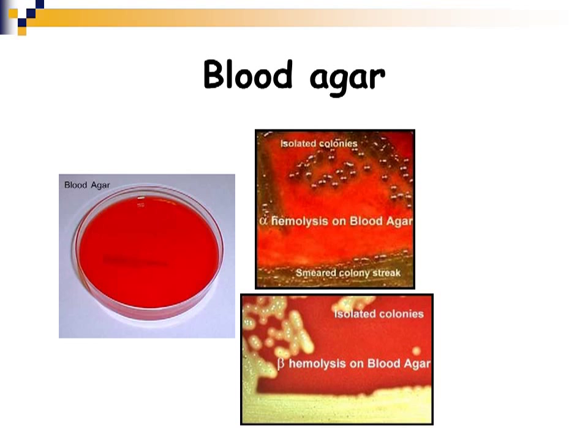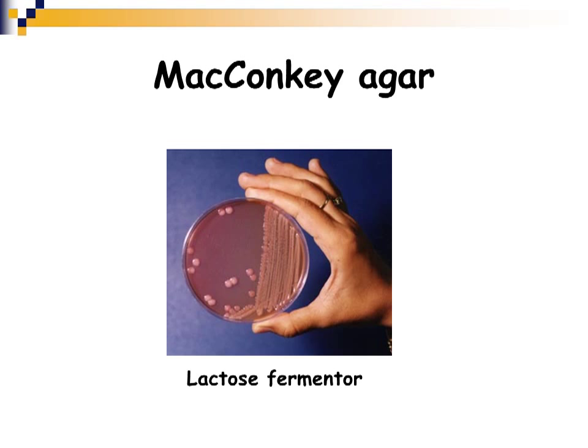MacConkey agar is commonly used for gram-negative rods because it differentiates lactose fermenters from non-lactose fermenters. It is both selective and differential: it contains inhibitory agents that prevent gram-positive organisms from growing, and a pH indicator plus lactose so that lactose-fermenting colonies turn bright pink. Non-lactose fermenters won't change color — they remain a clear, dull white.